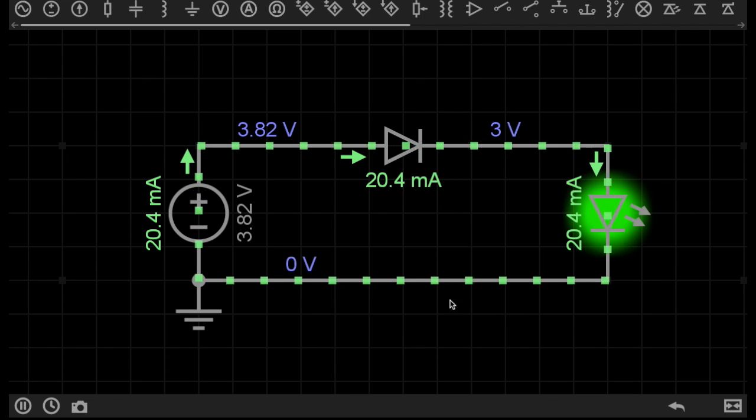And because that became the conventional way of thinking, that the electrons moved in this direction, basically all of our symbols, all of our circuit representations have been drawn to match the flow of electrons from positive to negative.